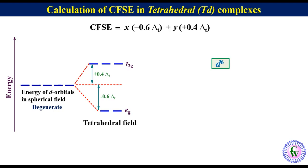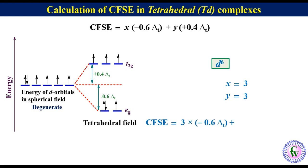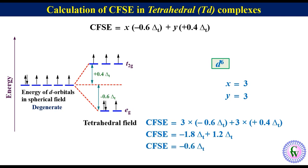If there are 6 D-electrons in the metal ion, in a spherical field environment all 6 electrons will be here. In tetrahedral ligand field environment, two electrons will enter eg orbitals and 3 in t2g. The remaining one electron will again enter eg. So x is equal to 3 and y is equal to 3. CFSE is equal to 3 into minus 0.6 delta-t plus 3 into 0.4 delta-t, giving minus 1.8 delta-t plus 1.2 delta-t. Thus CFSE will be equal to minus 0.6 delta-t.